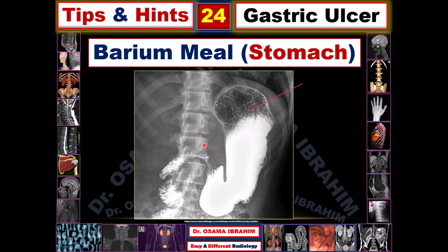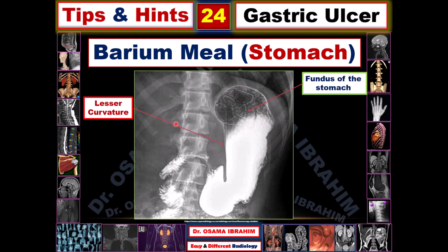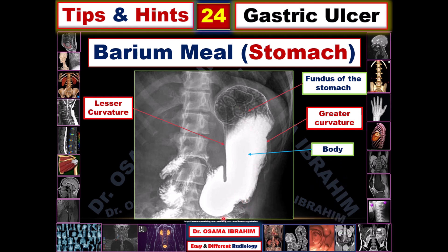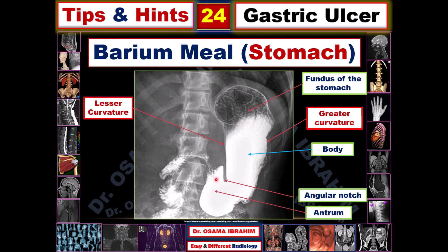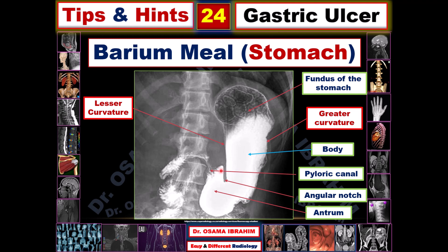Looking at the anatomical parts of the stomach: this region represents the fundus of the stomach. The lesser curvature is appearing in the medial aspect, the greater curvature in the lateral aspect, and this is the body of the stomach. This arrow refers to the angular notch between the gastric body and the antrum. This part is the antrum, which is distal to that angular notch, and that arrow refers to the pyloric canal.